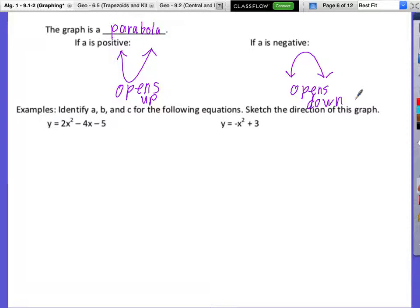So, examples, we're going to identify A, B, and C for these two equations, and we're going to sketch the direction of the graph. So, here, we have a quadratic equation with Y equals AX squared plus BX plus C. We've identified A, B, and C before. That is not new to us. However, sketching this direction of the graph is going to be new to us. What is A here? Two. What is B? Negative four. And what is C? Negative five. Now, is this one going to open up or open down? Up. How do you know up? A is positive. So, this one will open up.